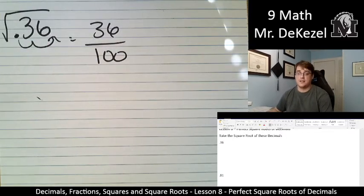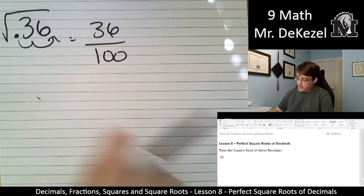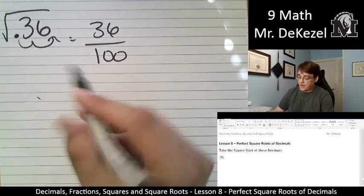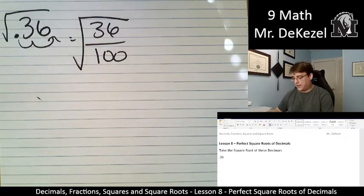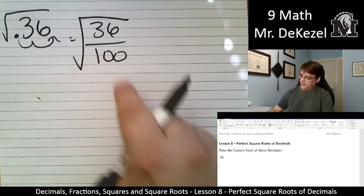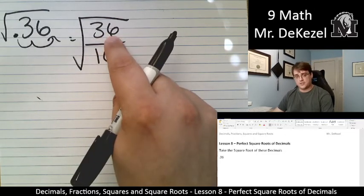That would make a whole lot more sense as we're talking about perfect square roots of decimals. So that means when I'm making this a fraction, I'm still going to have a square root sign over the whole thing. I already know that when I have a square root, I can break it up, break up this fraction.